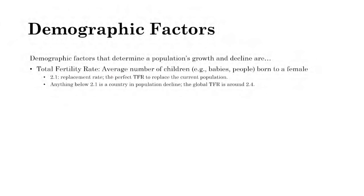Anything below 2.1 is population decline because you're below the replacement rate and cannot replace the current population. Anything above 2.1 is population growth. The global total fertility rate is 2.4, so the globe is seeing population growth.